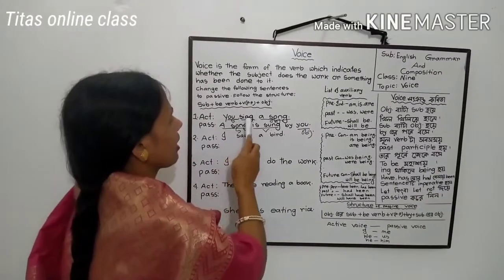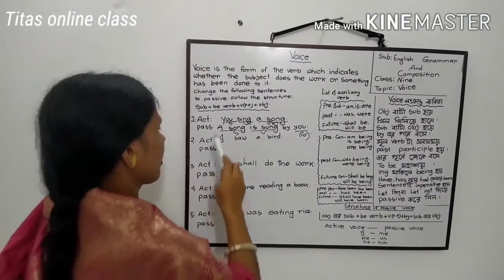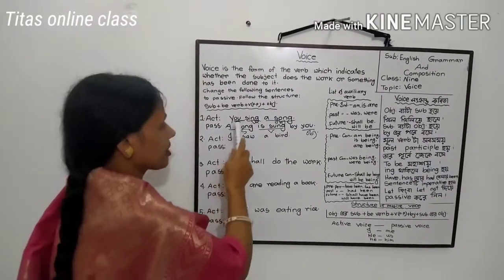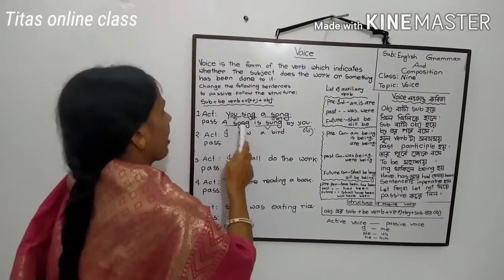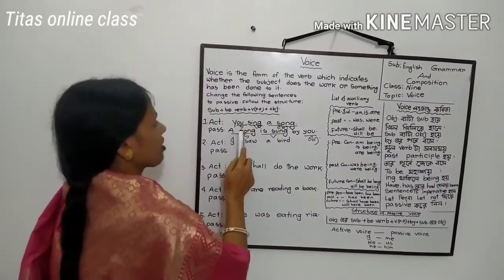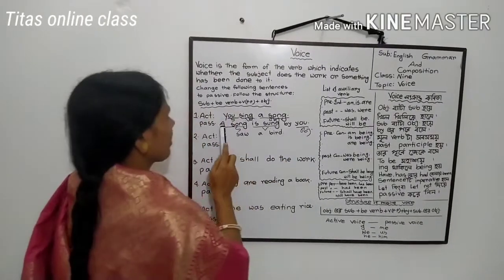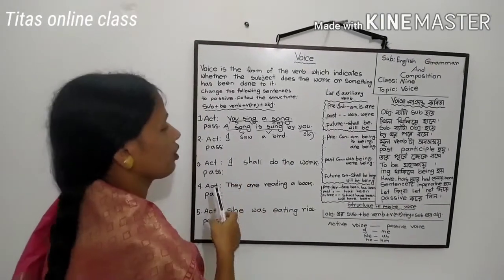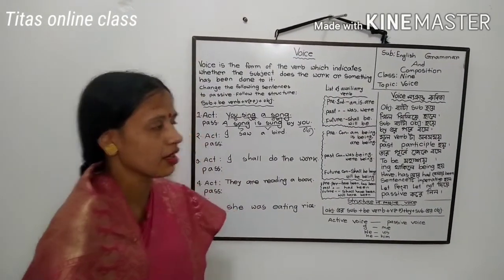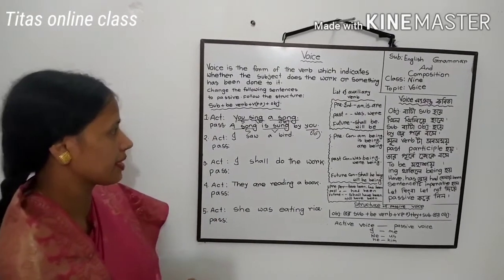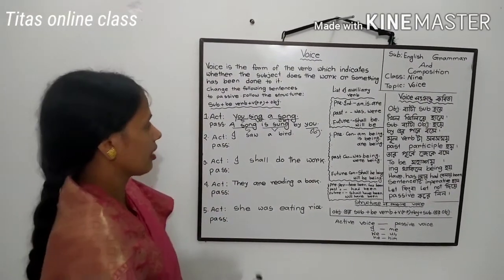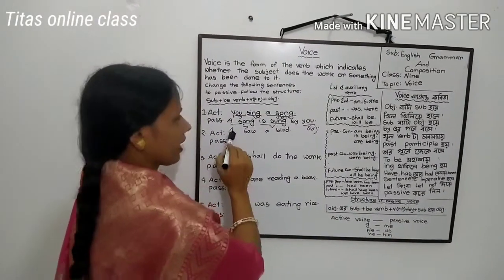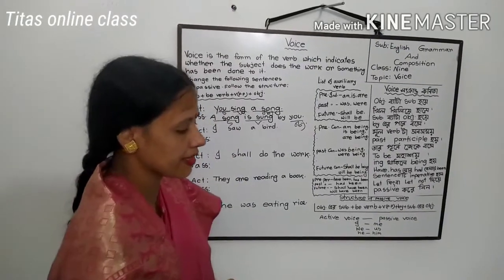In the active form, 'You sing a song' — the subject 'you' is active. On the other hand, in 'A song is sung by you' — the subject 'a song' is passive. We know there are two kinds of voice: active and passive. An action done by the subject is called active voice, and an action done by the object is called passive voice.